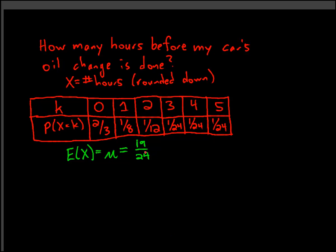We'll need to use that expectation when we calculate the variance. To get the variance and standard deviation, we always have to do the variance first, because we calculate the variance and then the standard deviation is just the square root of that variance. The variance is denoted by sigma squared.